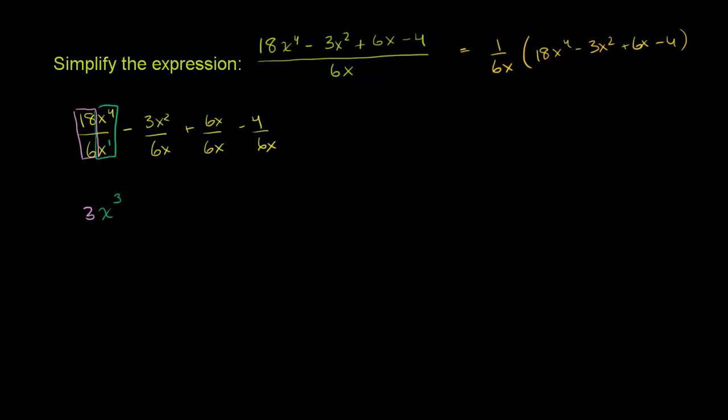Then we have this coefficient over here, or these coefficients. We have negative 3 divided by 6. So I'm going to do this part next. Negative 3 divided by 6 is negative 1 half. And then you have x squared divided by x. We already know that x is the same thing as x to the first. So that's going to be x to the 2 minus 1 power, which is just 1, or I could just leave it as an x right there.